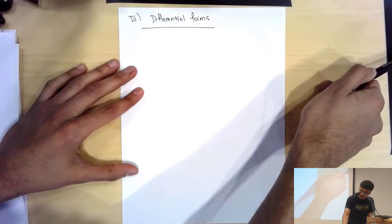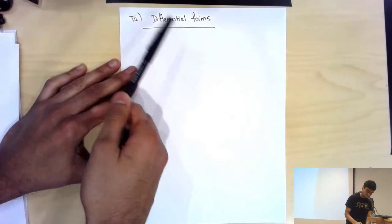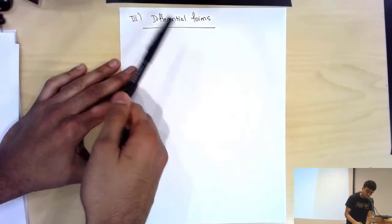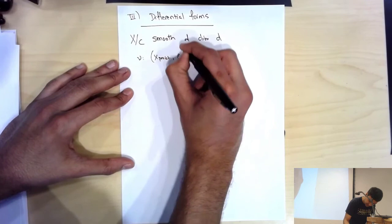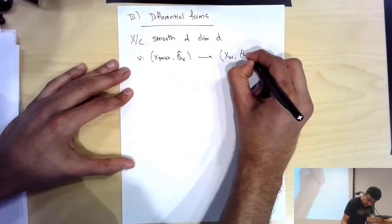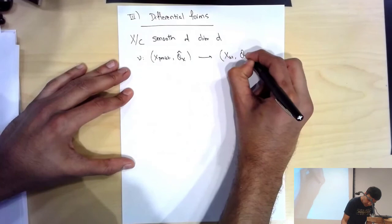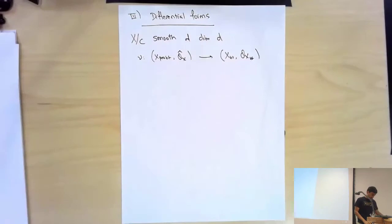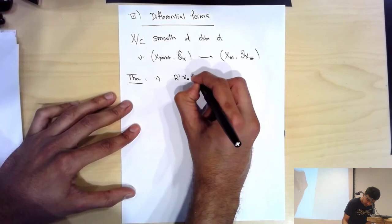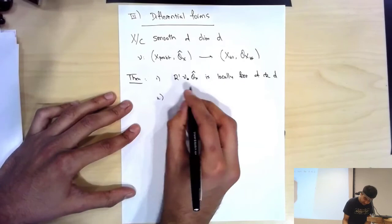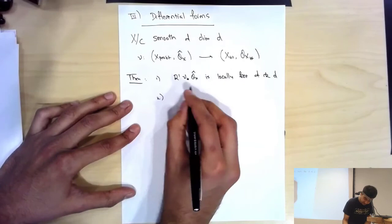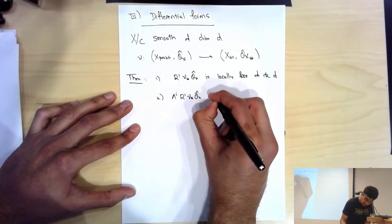For the primitive comparison theorem you don't need X to be smooth, just proper. For the discussion with differential forms, you want to assume X is smooth, because otherwise differential forms are a strange thing. So let X over C be smooth of dimension d. I have the morphism ν from X_{pro-ét} to X_{ét} as a morphism of ringed sites. We want to understand the pushforward of Ô_X down to the étale site as a sheaf of O_X-modules. The theorem is: R^1 ν_* Ô_X is locally free of rank d, and cup products give an isomorphism ∧^i R^1 ν_* Ô_X ≅ R^i ν_* Ô_X.